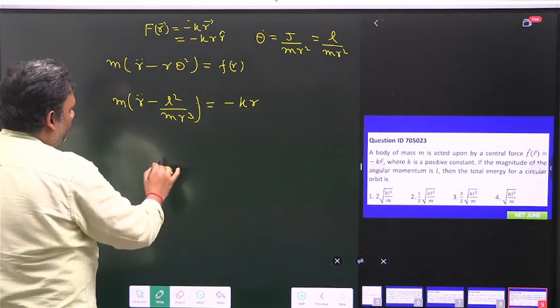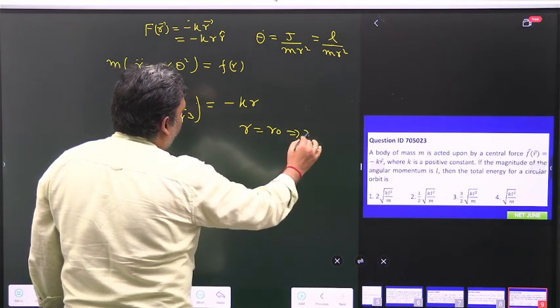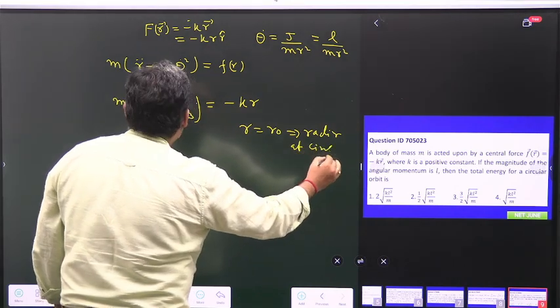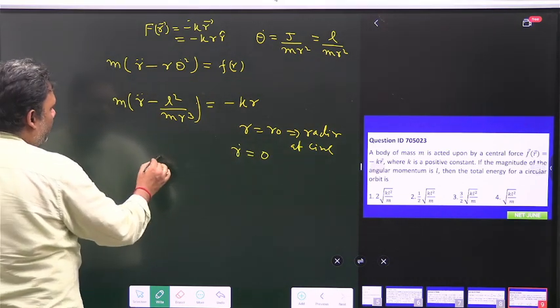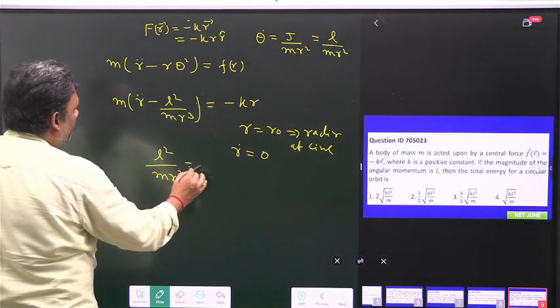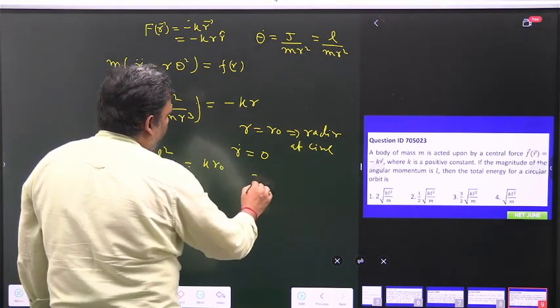So this is my equation and I assume that r is equal to r naught, which is the radius of the circle. So r dot is equal to 0. So we have l square upon m r naught cube is equal to kr naught.